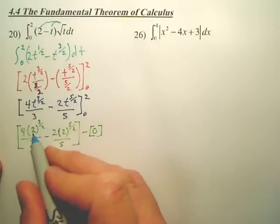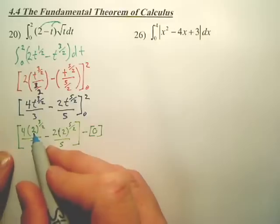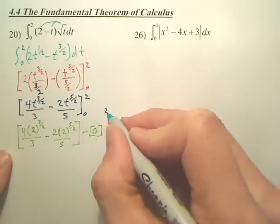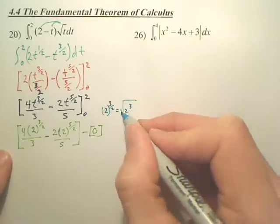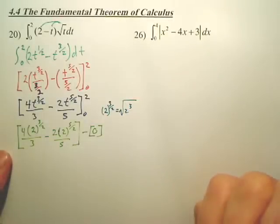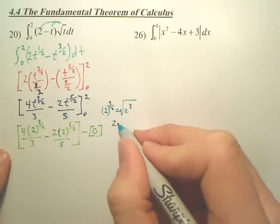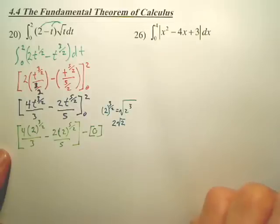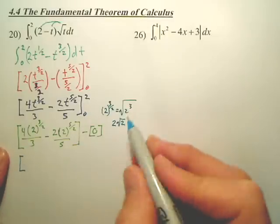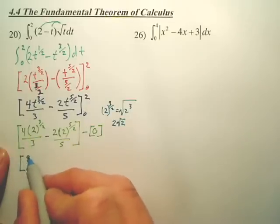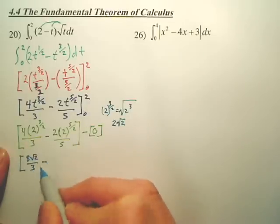Okay, now some of you might struggle with 2 to the 3 over 2. Let's rewrite that. 2 to the 3 over 2 is the same as 2 to the 3 square rooted, which would be 2 square root 2. So if I simplify this, I'll now have 8 square root 2 over 3 minus,